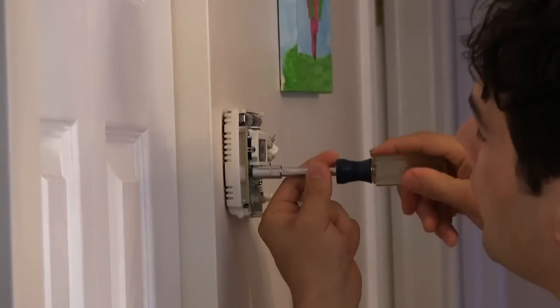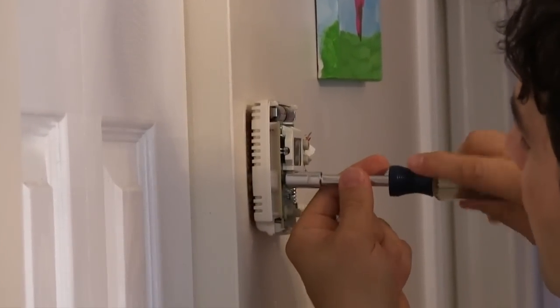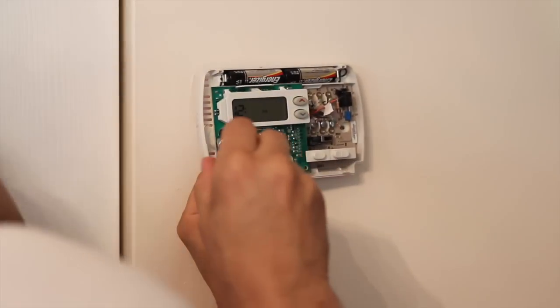Because we had labeled the wire C, we had to skip ahead. If we hadn't, we would have had to install the power extender kit as well.